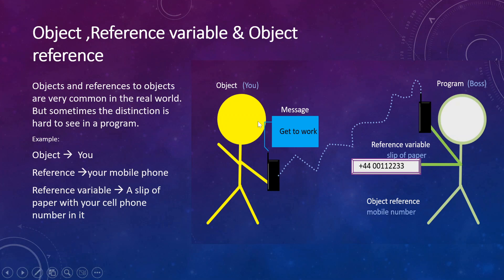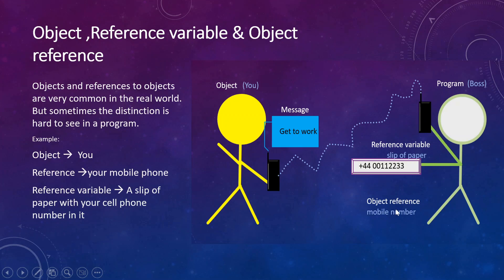We'll see this diagram, which will make it more easily relatable. Say there is a boss who needs to send a message to his employee. This person has a piece of paper with a phone number on it. We can assume this piece of paper is like a reference variable and the object reference. The moment he dials using his mobile phone, a reference is made, and that reference is going to be the mobile number. The person he wants to send the message to is going to be an object.